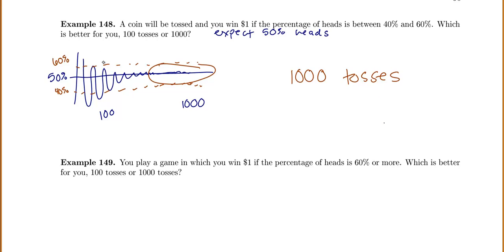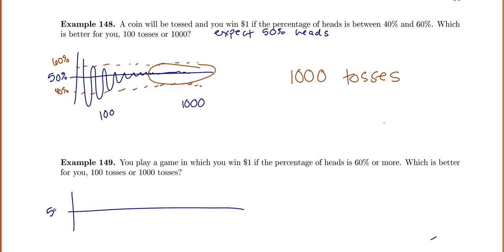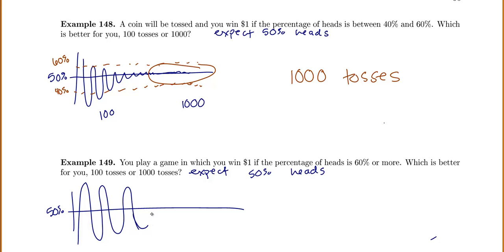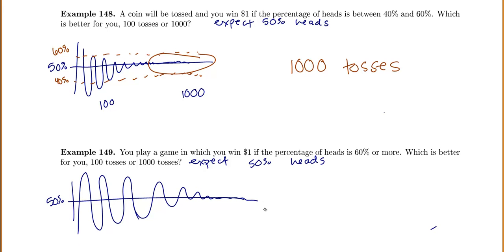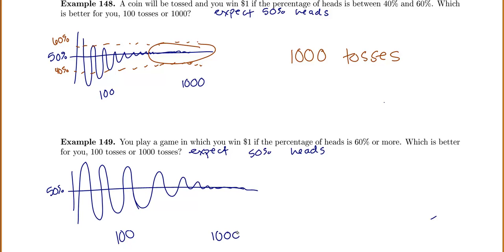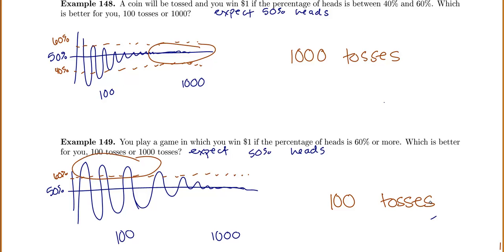For problem 149: you win $1 if the percentage of heads is 60% or more. Which is better, 100 tosses or 1,000 tosses? We'd expect 50% heads. You might start low and bounce around, but eventually narrow to 50%. To win you need to be above 60%, and that seems more likely in the early bouncing around. So you'd be better off with 100 tosses if you want to get above 60%.